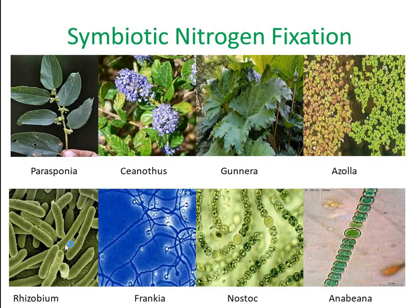Other types of plants also form symbiotic associations: Gunnera and the tiny water fern Azolla form associations with the cyanobacteria Nostoc and Anabaena respectively. Parasponia forms association with Rhizobium, Ceanothus forms association with Frankia, Gunnera forms association with Nostoc, and Azolla forms association with Anabaena.